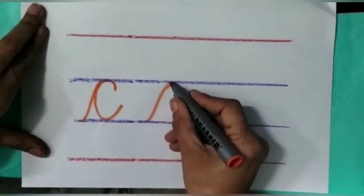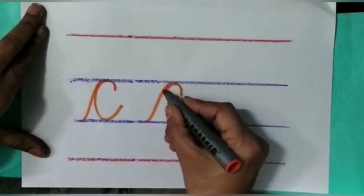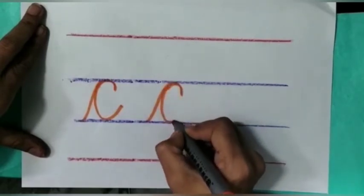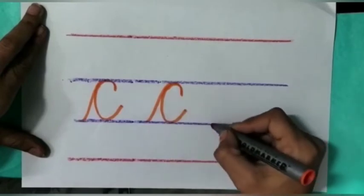Make a curve line. Go up and go down. Go to center line. This is the letter C.